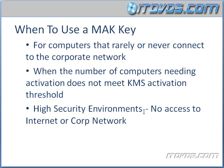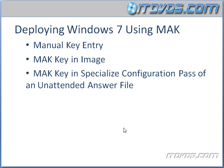Also use a MAK key in high security environments that have no access to the internet or the corporate network. There are a couple of different ways we can deploy Windows 7 using MAK. We can manually enter it in by right-clicking on our computer, going to Properties, clicking Change Product Key, entering in the product key, and activating that way.